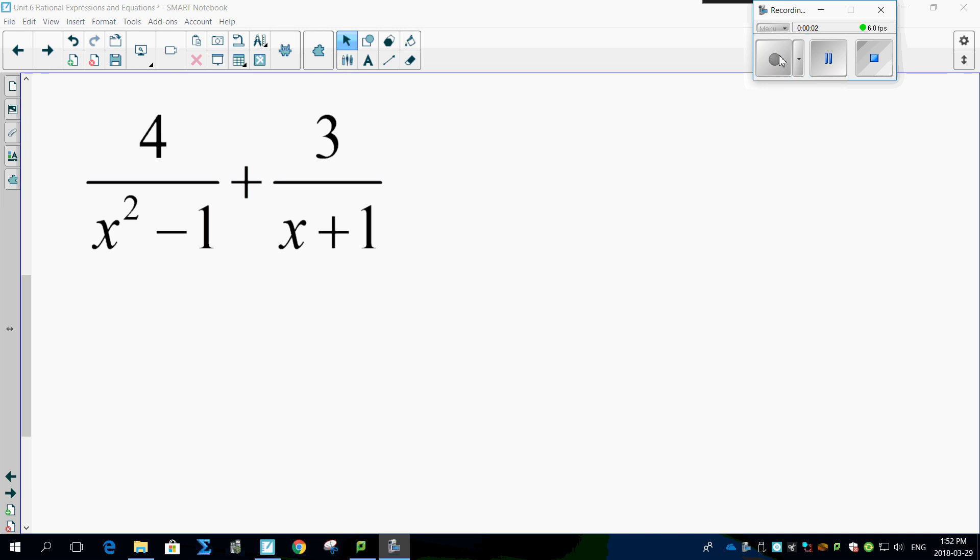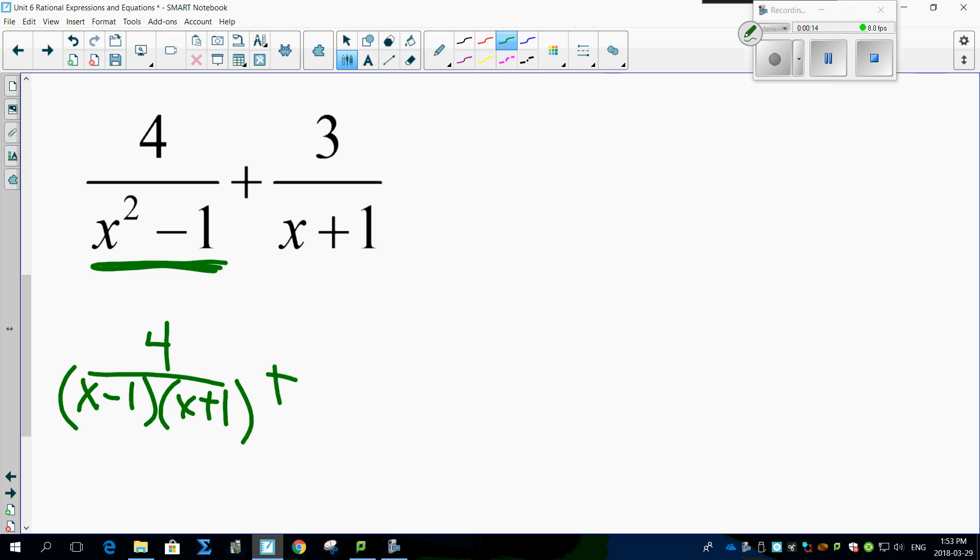Oakey-dokey, look what I got in front of you right here. Better recognize this, of course, is a difference of squares. So we actually have 4 over (x minus 1)(x plus 1), and plus 3 over x plus 1.